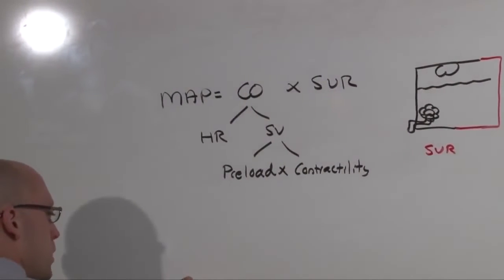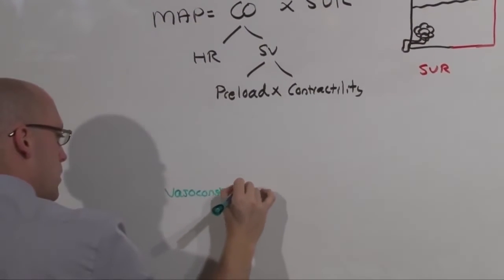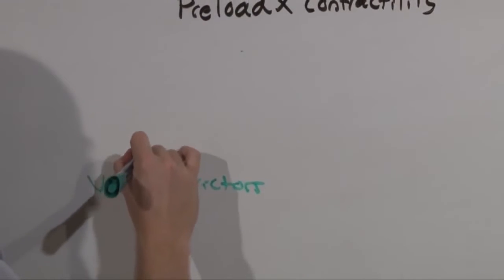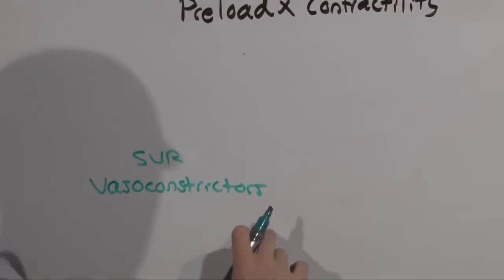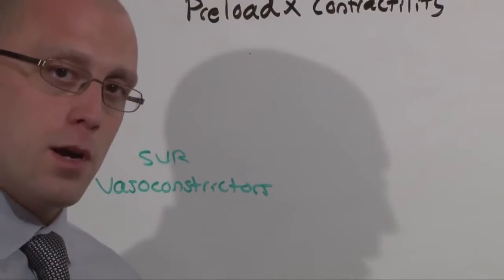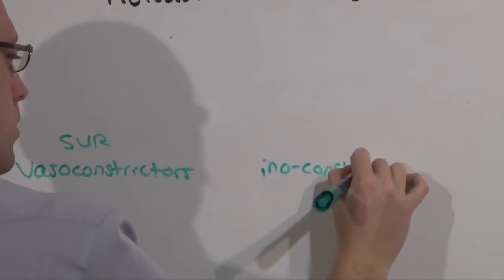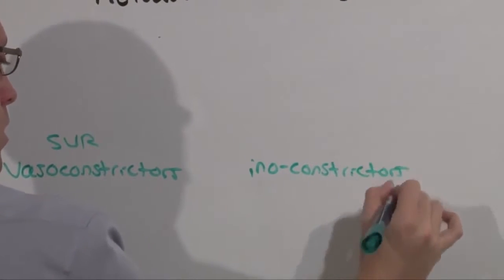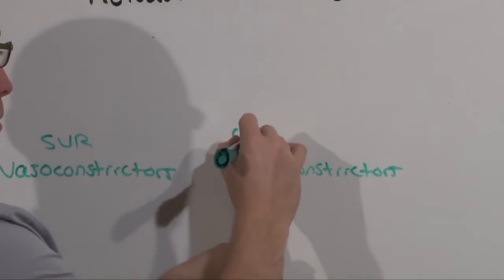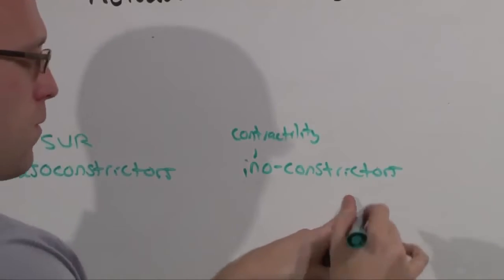There are four general classifications that you should think of. The first one is pure vasoconstrictors. These provide vasoconstriction, and that's it. These are purely SVR. There are inotropes, they're called inotropes, but I call them innoconstrictors. Being an inotrope, it provides some contractility and provides some vasoconstriction.